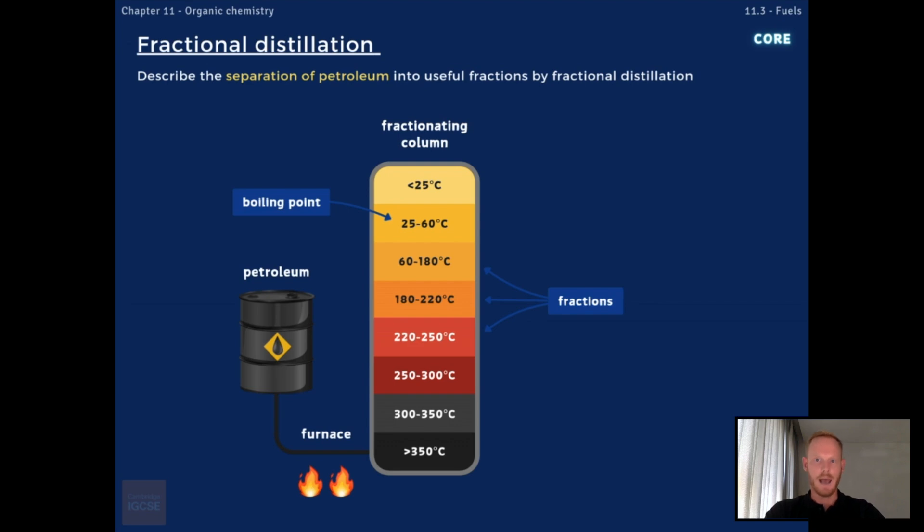The hot vapours are fed into the fractionating column, which is hotter at the bottom and cooler at the top. As the vapours rise, they gradually cool down and condense into liquids. Hydrocarbons with higher boiling points condense lower down in the column, that is, at higher temperatures, while those with lower boiling points condense higher up. The different condensed or liquid fractions are then collected at different points along the column.